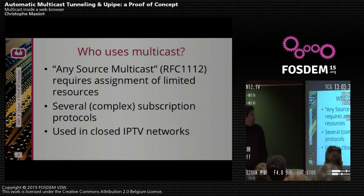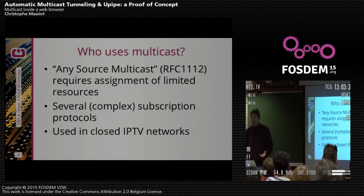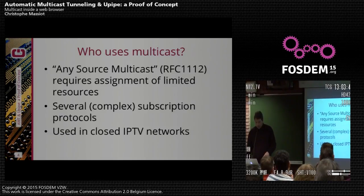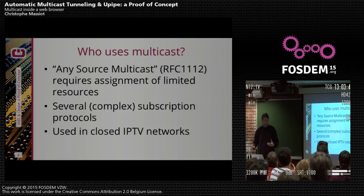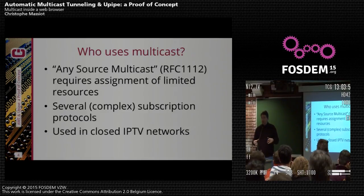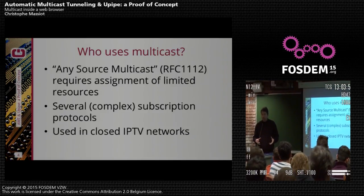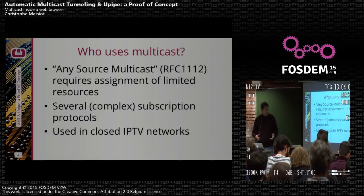The first specification about multicast was called Any Source Multicast, an RFC. A multicast stream is defined by an address. To subscribe, you just give the address. There are several subscription protocols that allow the multicast stream to be sent from the server to the client. This also requires a central authority to assign multicast addresses, and it is currently mostly used in closed IPTV networks.